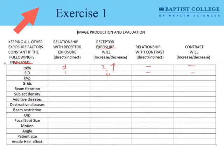KVP is a major technical factor. It has a direct relationship with receptor exposure, so as KVP increases, we would expect receptor exposure to increase. Interestingly, it also has a relationship to contrast — as KVP increases, image contrast decreases. So we call that an indirect relationship with contrast: as KVP increases, contrast decreases.